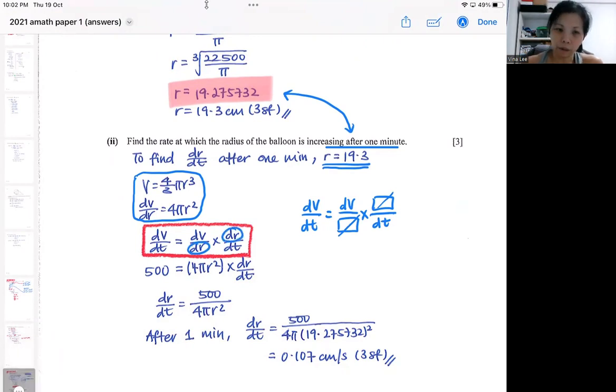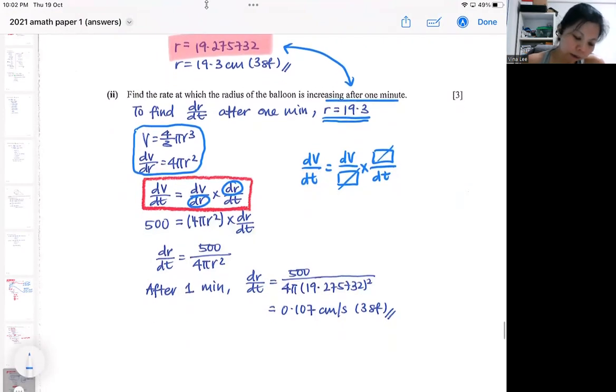So that is the formula. Within the formula, dV/dt was provided to you, dV/dr was worked out by your differentiation. There are three things inside this formula. One has been provided to you, one you already worked it out using your differentiation. So the only one to find is dr/dt.